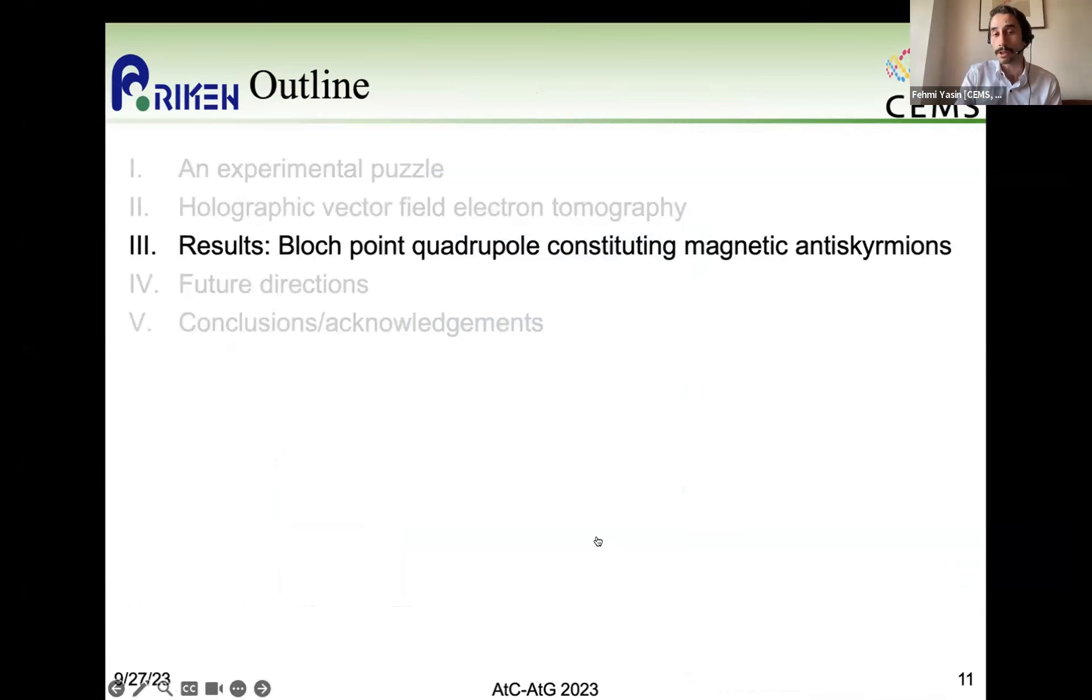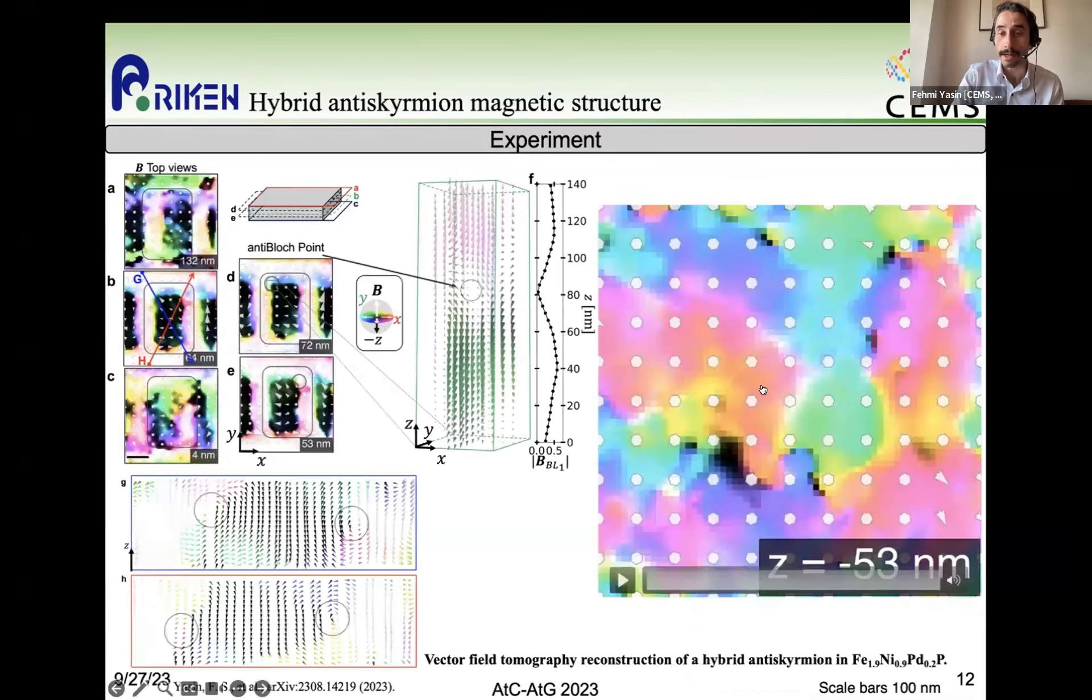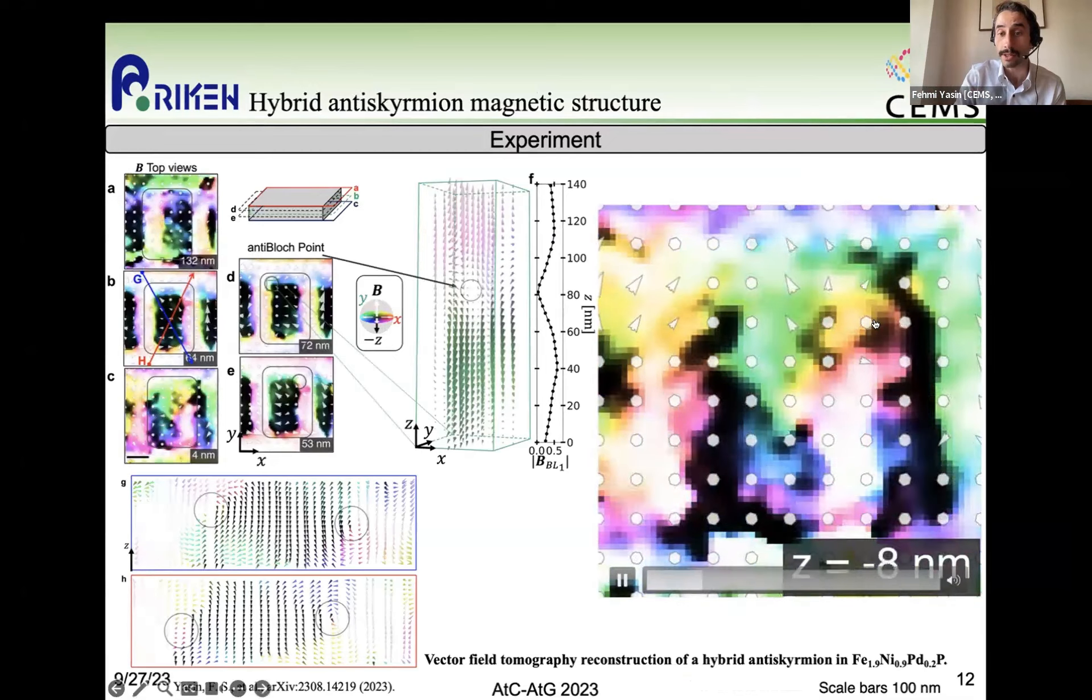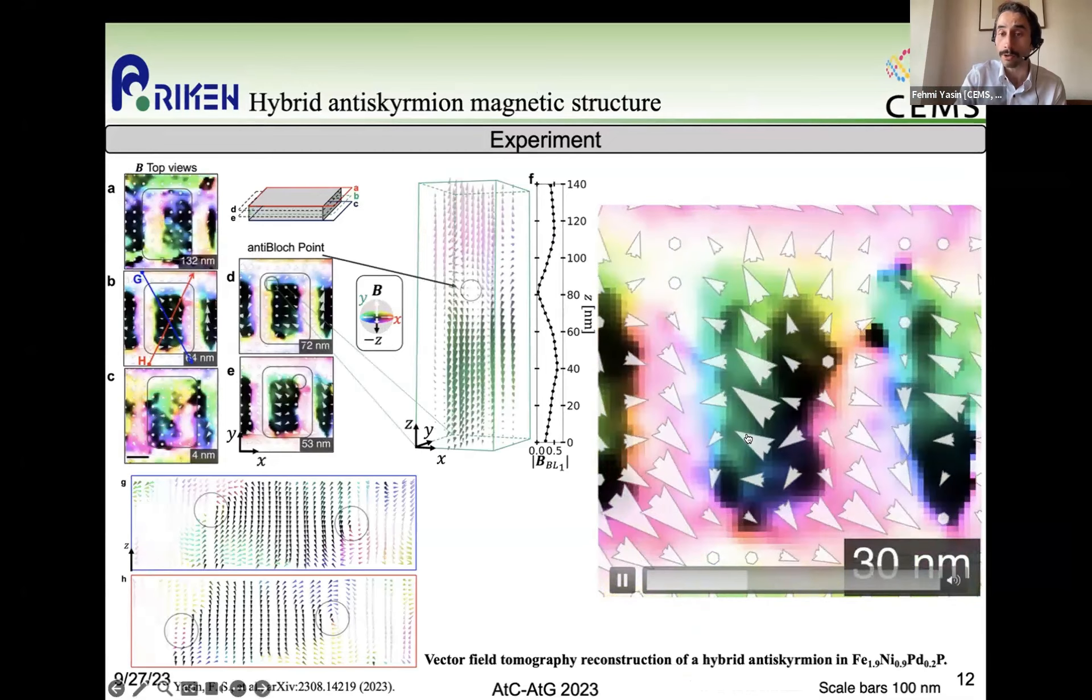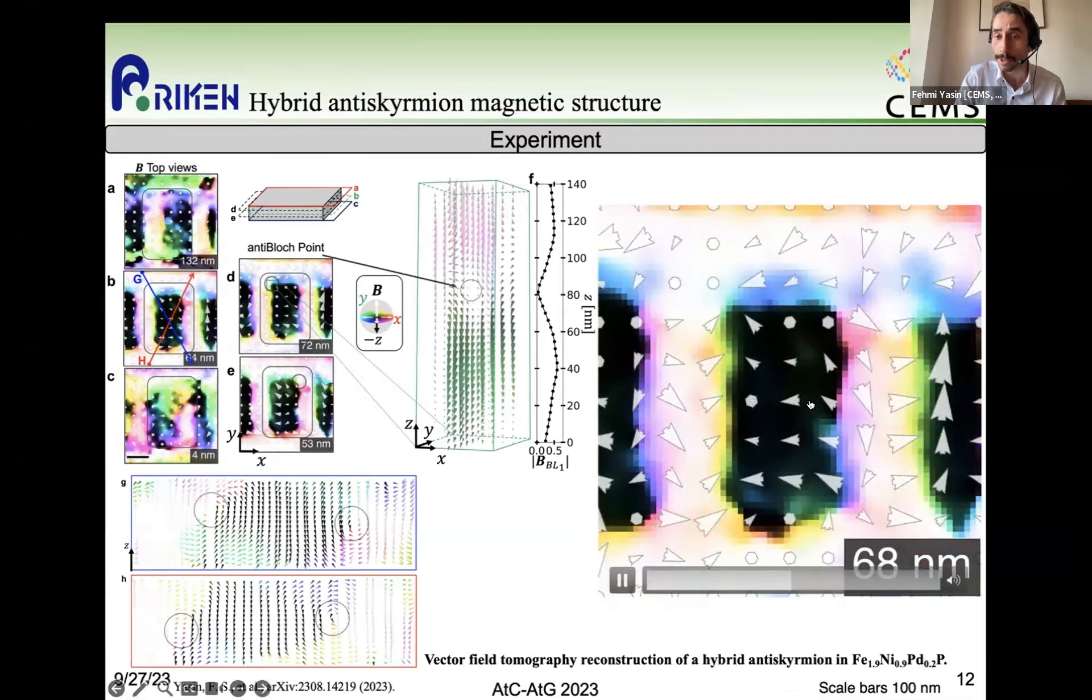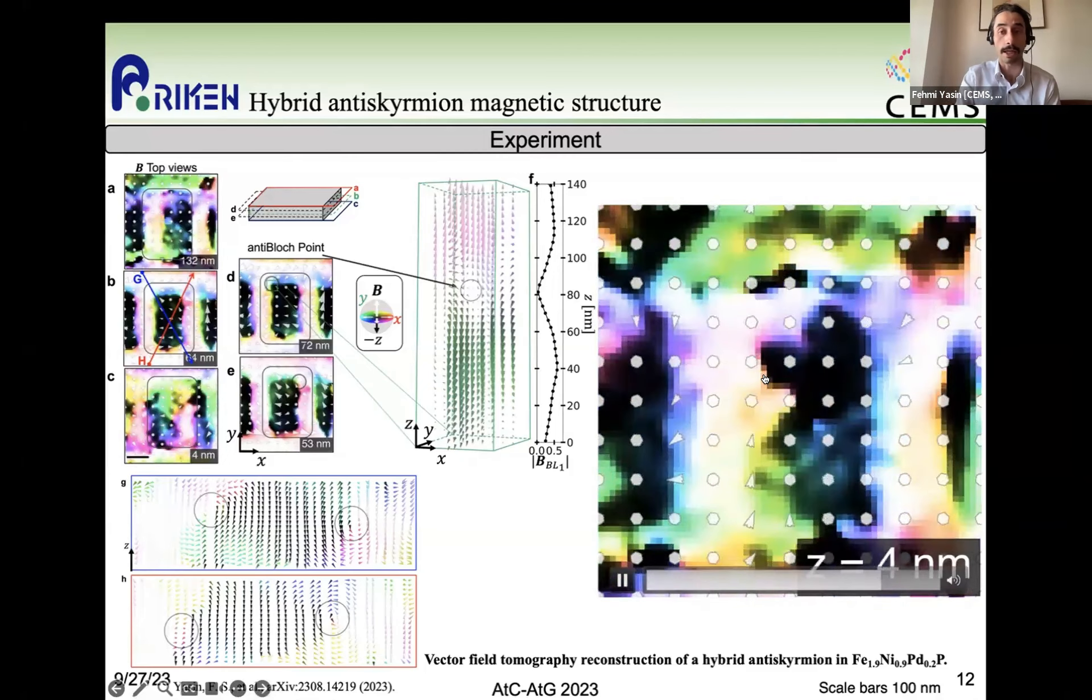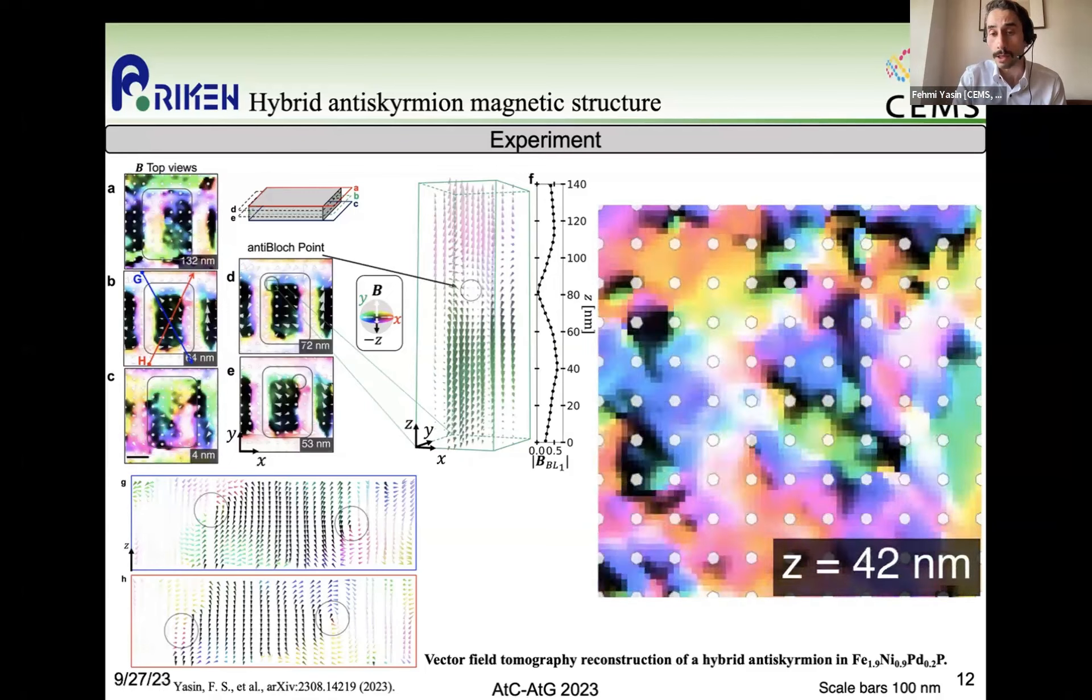So let's move on to the results. Here on the right-hand side, I'm going to actually take you through the X, Y slices through the material. And you can see that on the top surface, we actually see some skyrmion-like contrast. In the bulk, we see an antiskyrmion-like contrast. And on the bottom surface, we see another skyrmion-like contrast.